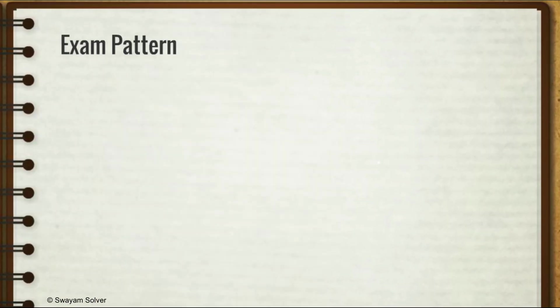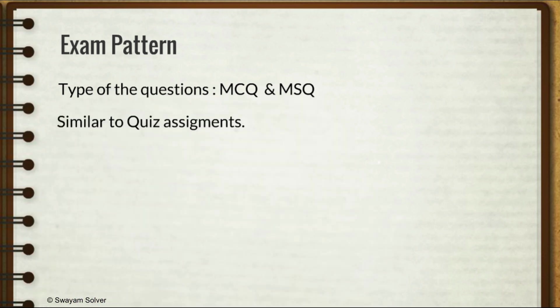Now let's have a look at the exam pattern. Many of you have this query like what type of questions would be there in the exam. Make this very clear - there will be only MCQs and the paper would be entirely objective. Only the type of questions you see in your weekly quiz assignments would be there. That means there could be MCQs, multiple choice questions in which only one of the options is correct, or there could be MSQ, multiple select questions in which more than one option could be correct. 90% of the questions would be MCQs and almost 10% would be MSQ.